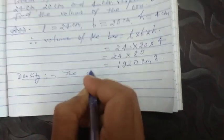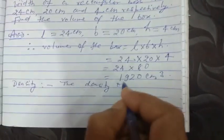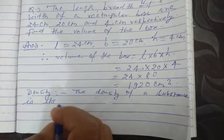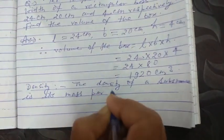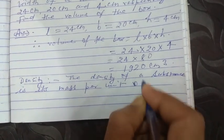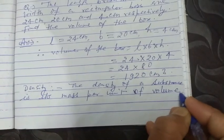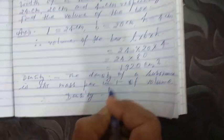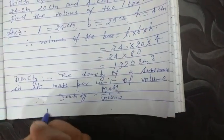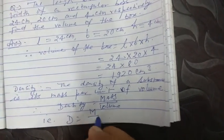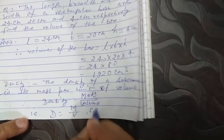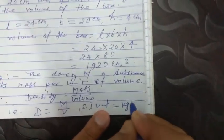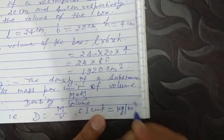Now, density. The density of a substance is its mass per unit volume. Therefore, density = mass ÷ volume, that is D = M/V. Its SI unit is kilogram per cubic meter.